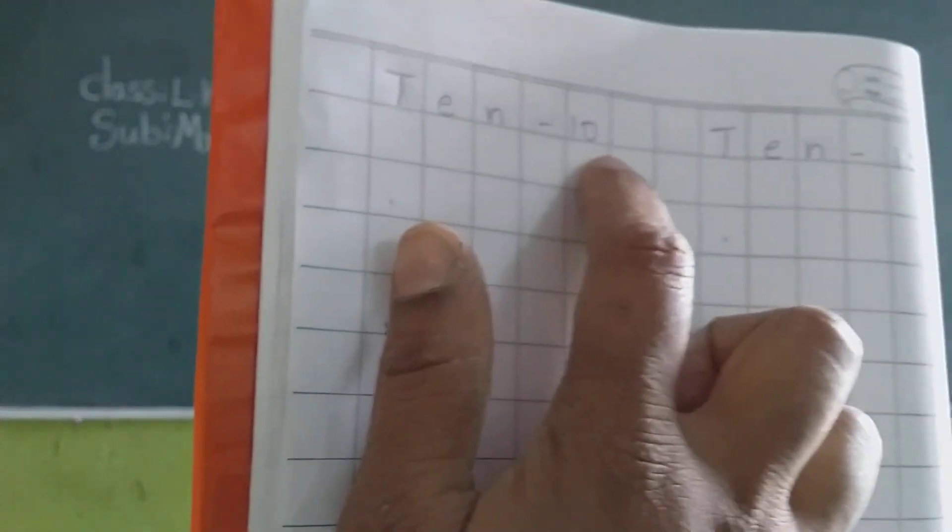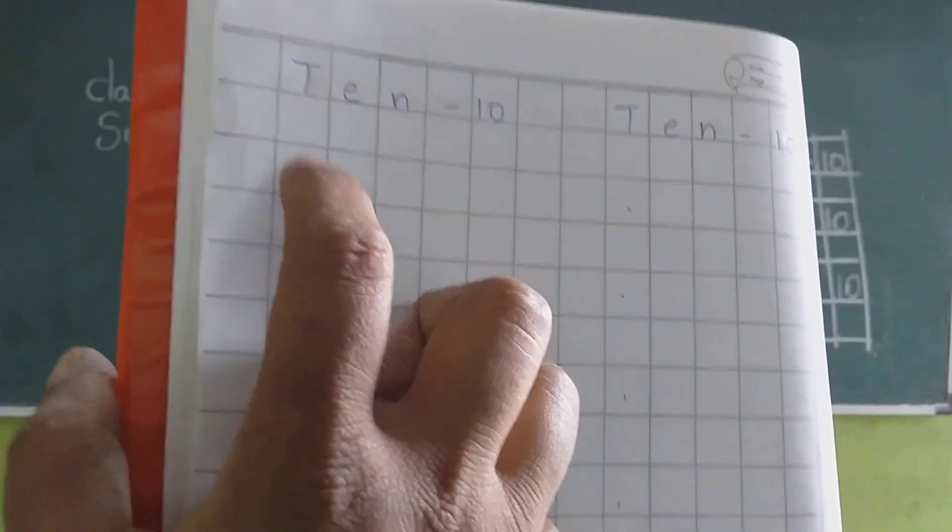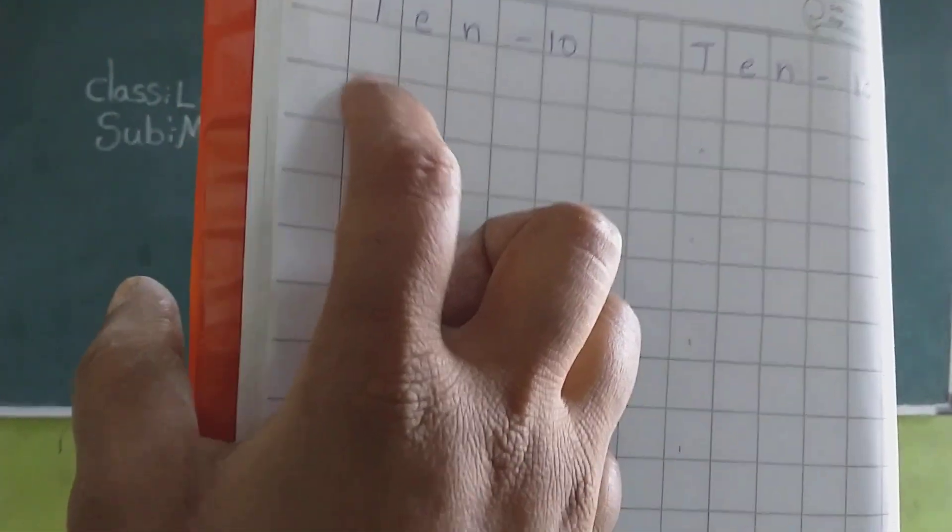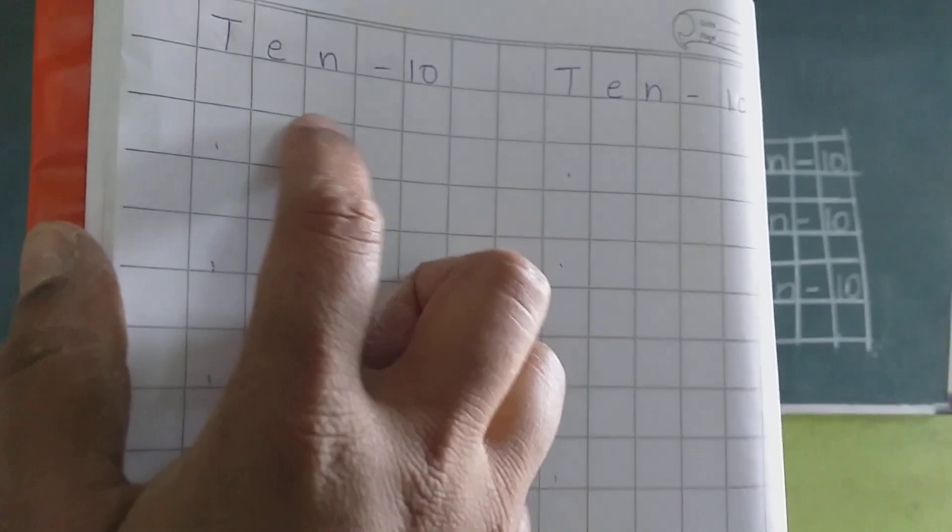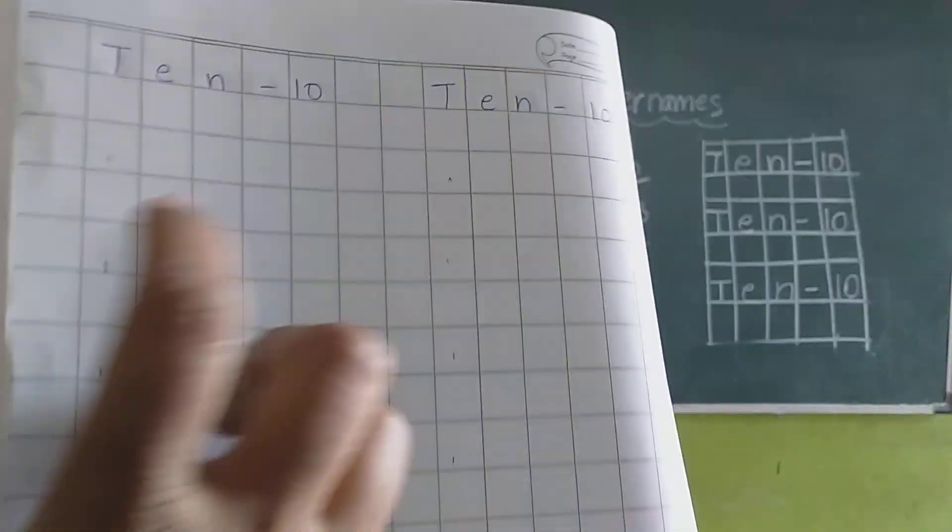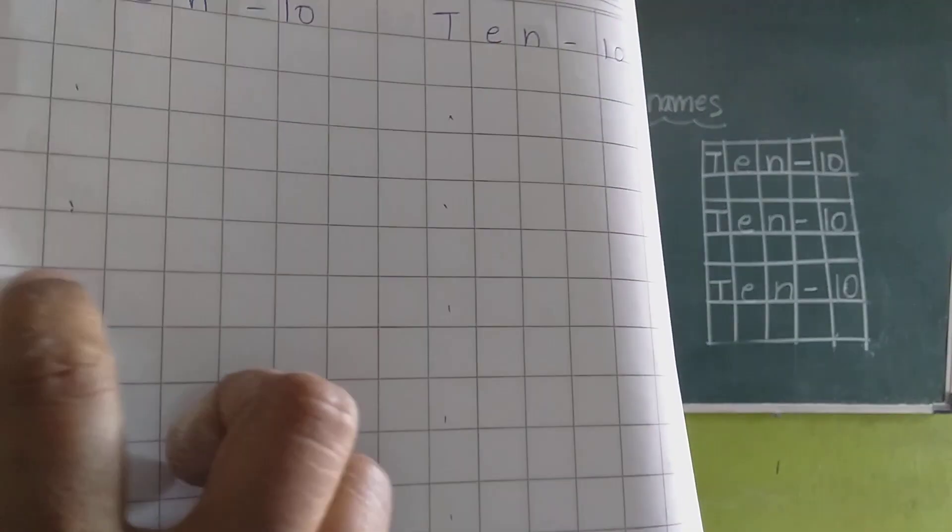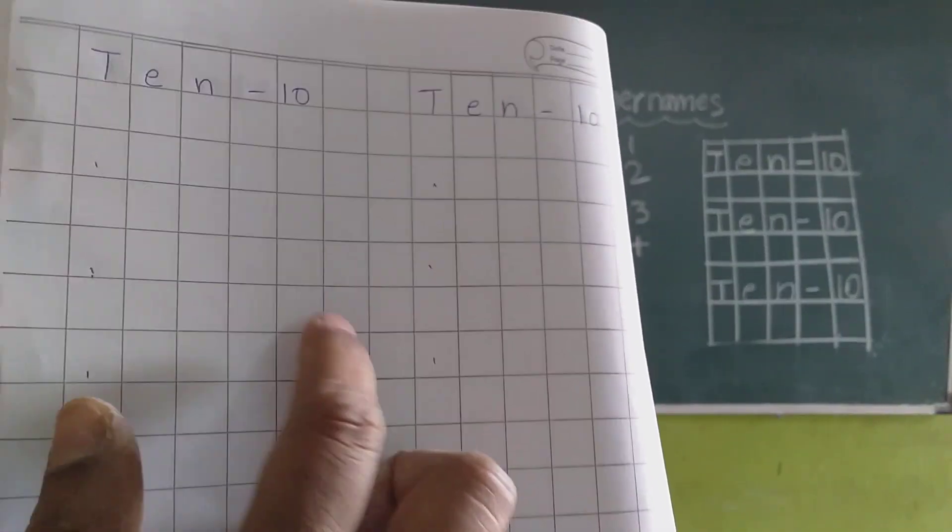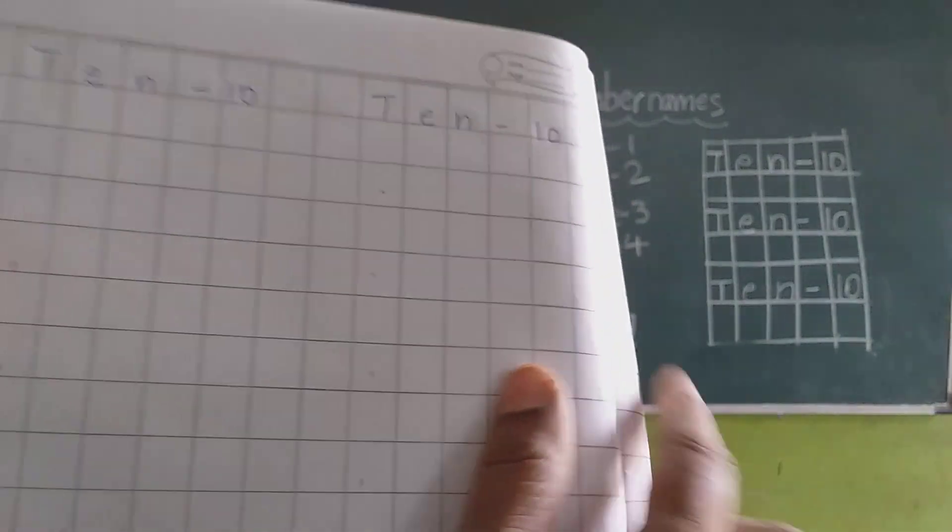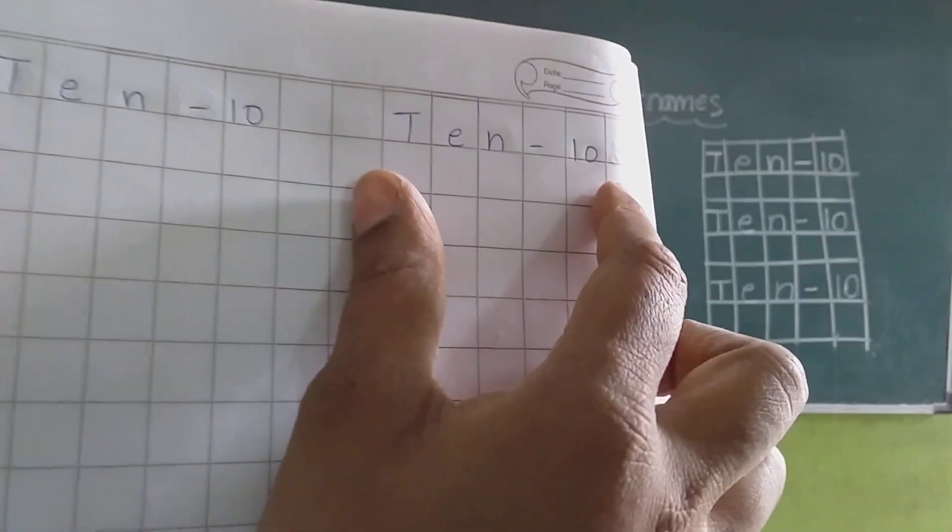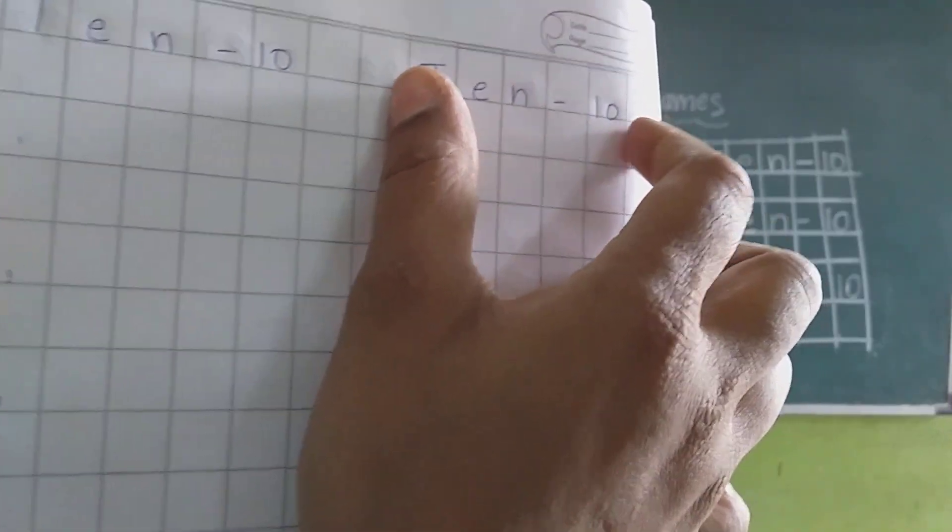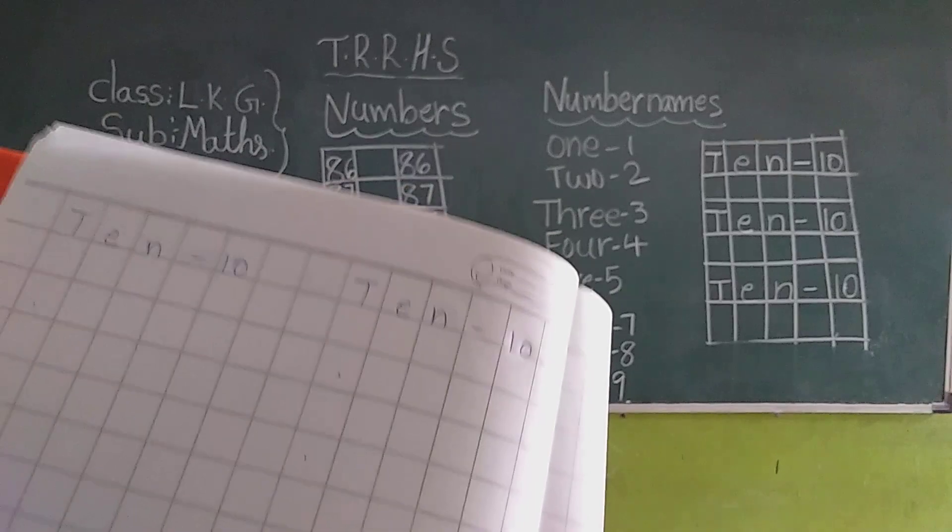And leave one line and read the spellings of the number name when you are writing like this. T, E, N, 10. T, E, N, 10. T, E, N, 10. Like that you have to read and write the spelling number name. You have to read and write this complete full page.